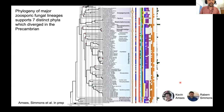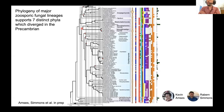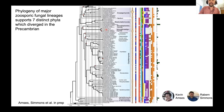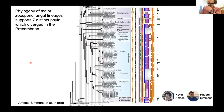This is what the data look like — pretty hard to read in detail. The tree is relatively well supported. The stars or diamonds are nodes where there's a difference between the concatenated tree and the coalescence tree. What we recover is seven distinct phyla of zoosporic fungi: Rosellomycota, which group with Microsporidia; Aphelidiomycota; Chytridiomycota; Neocallimastigomycota; Monoblepharidamycota; and then two additional phyla. I'm going to focus on the one that has to do with life cycles.